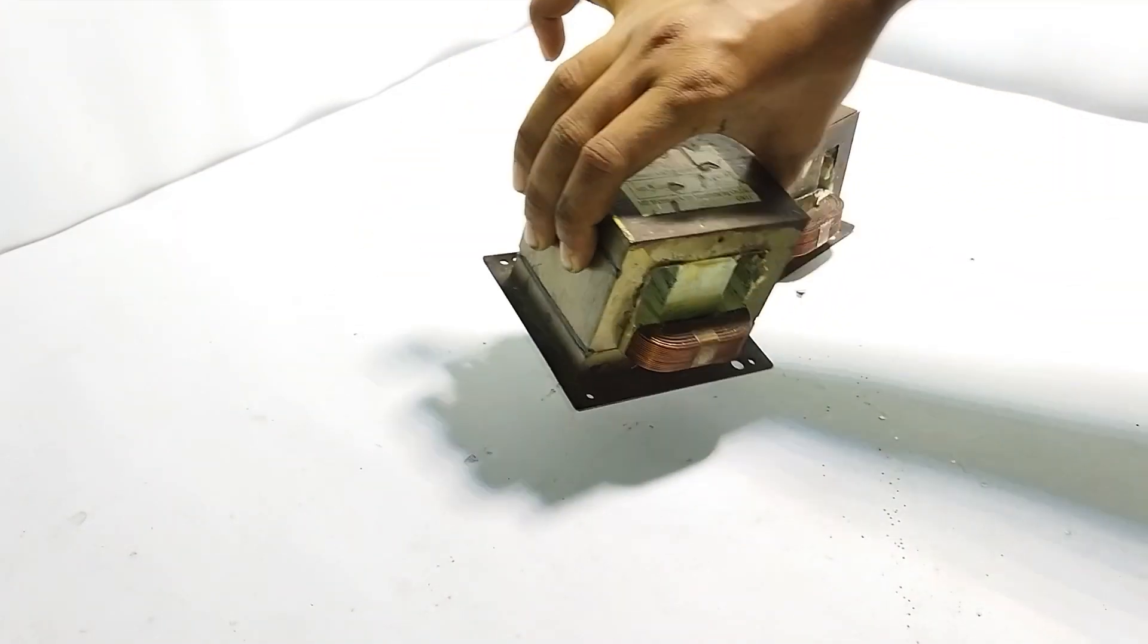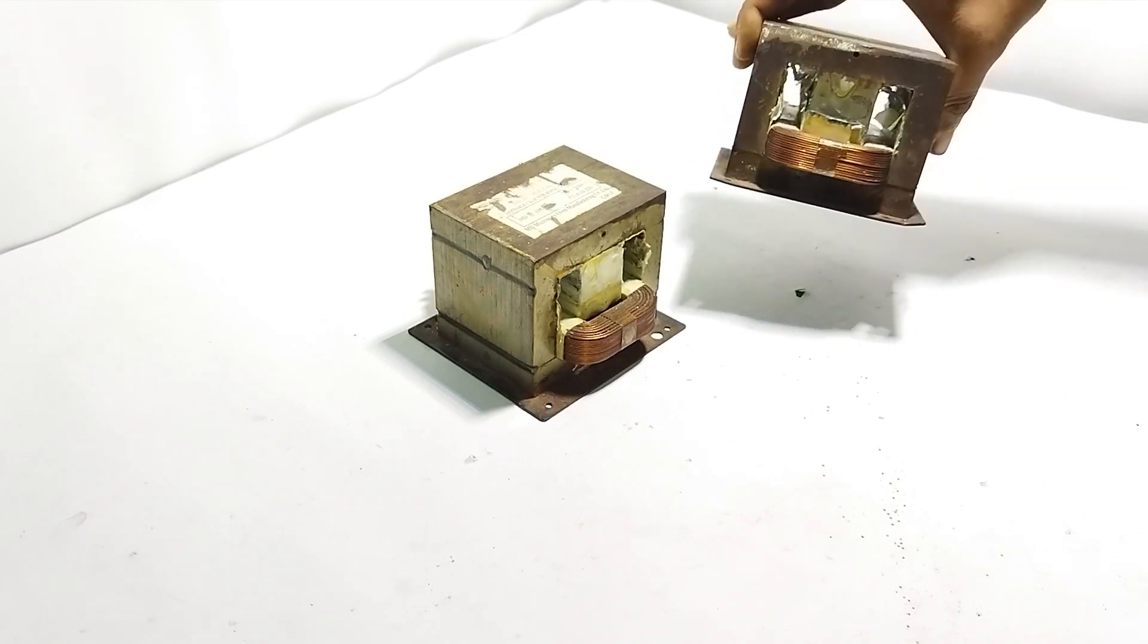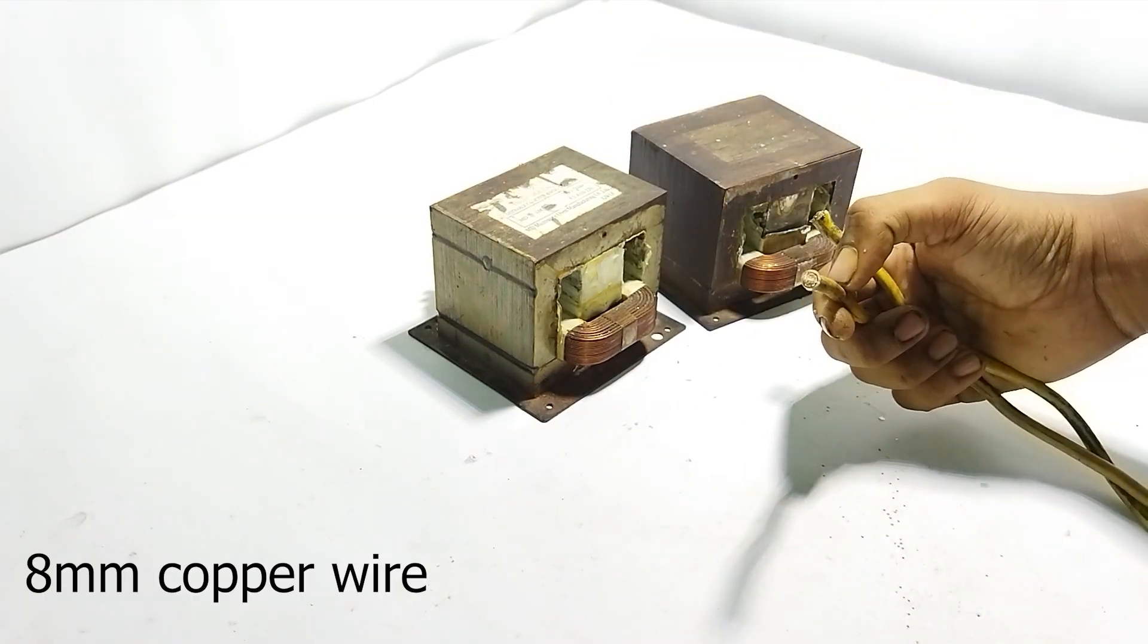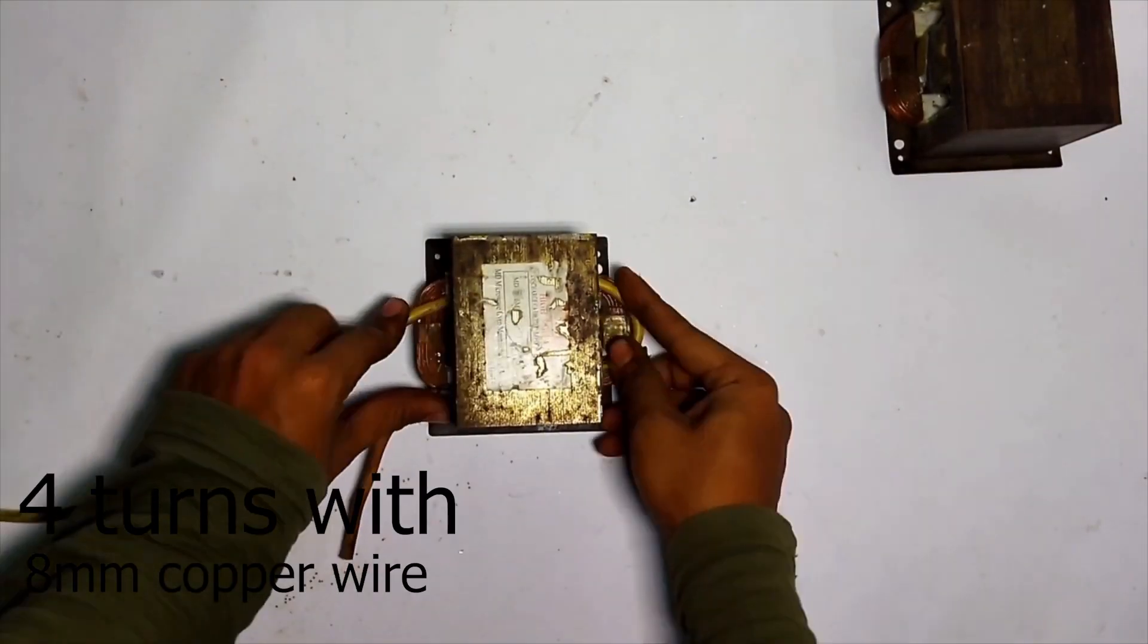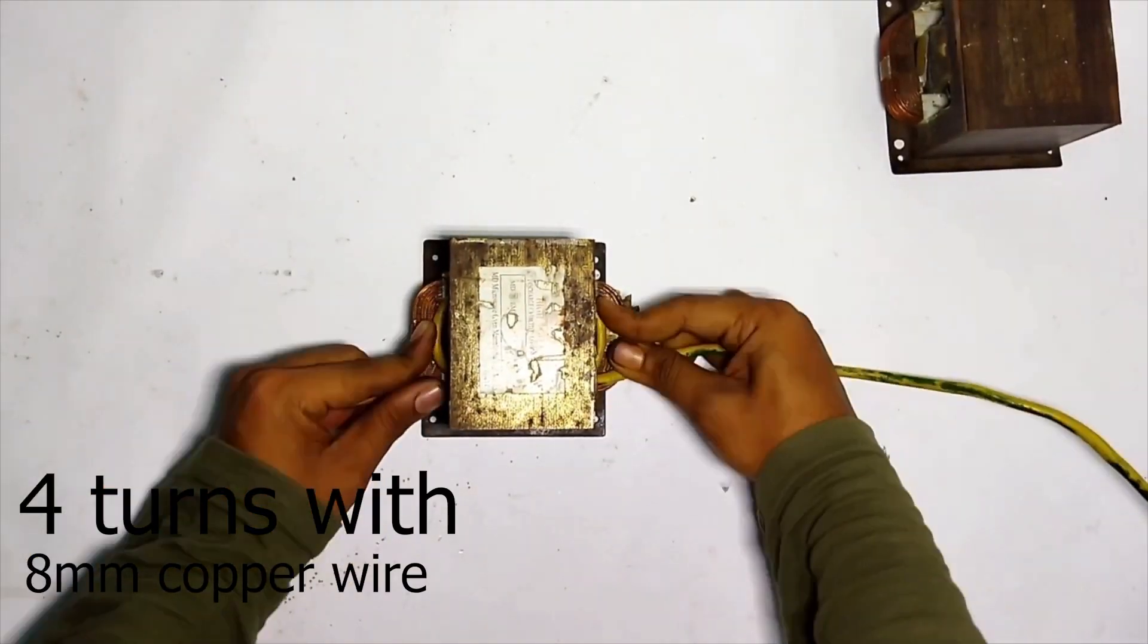So here we have two transformers without the secondary. Let's rewind the secondary with 8 millimeter copper wire. I'm going to wind 4 turns in each transformer.